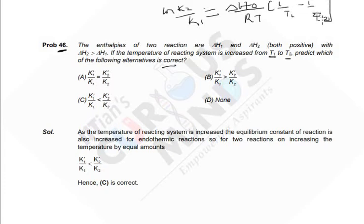We can see that the relation of our case will depend on the value of delta H. If I take both reactions from T1 to T2, then the temperature is increasing by equal amounts, and the reaction with the higher value of delta H, that ratio will be higher.